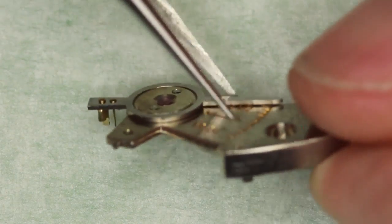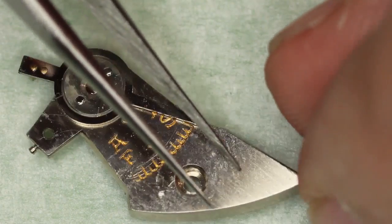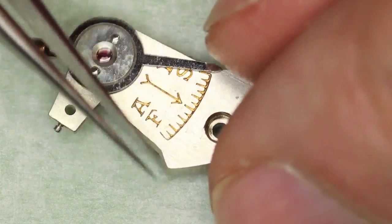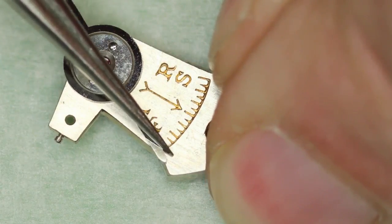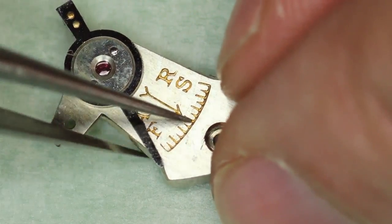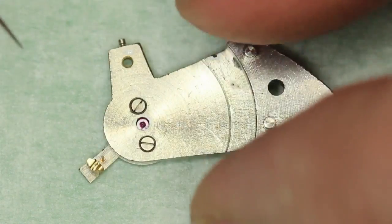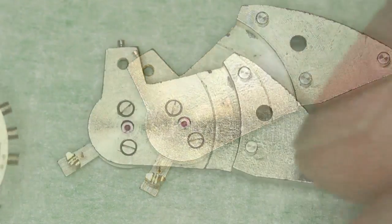So before reassembling, you want to make sure that the index is as far away from the stud as possible by pushing it across. And there's a good reason for that, which I'll show you in a moment.